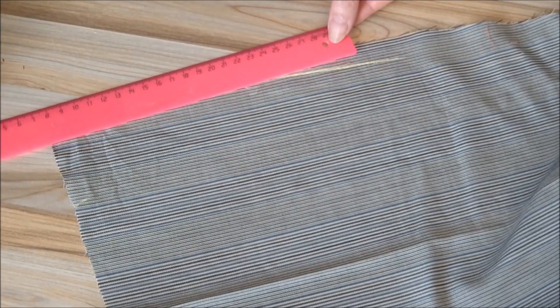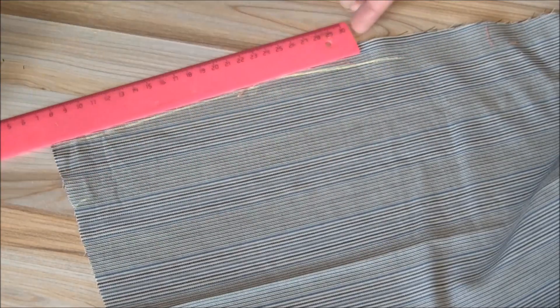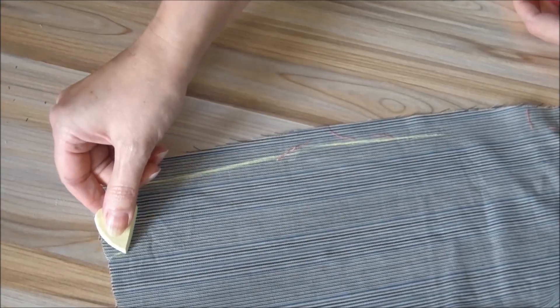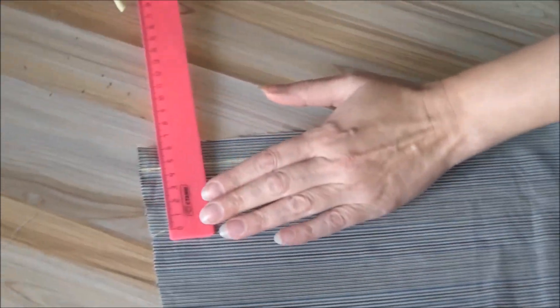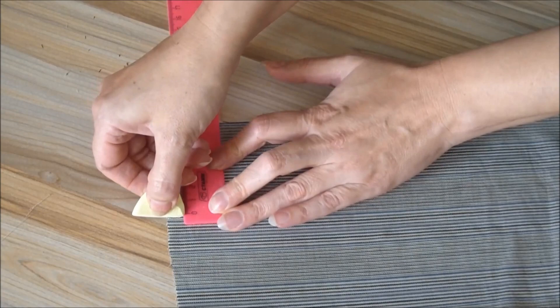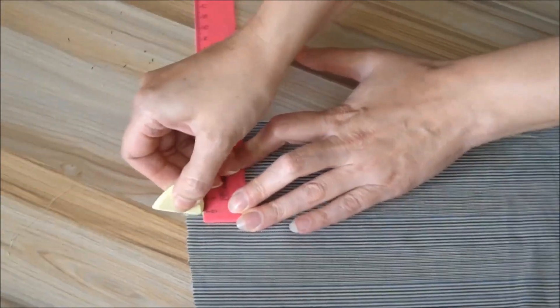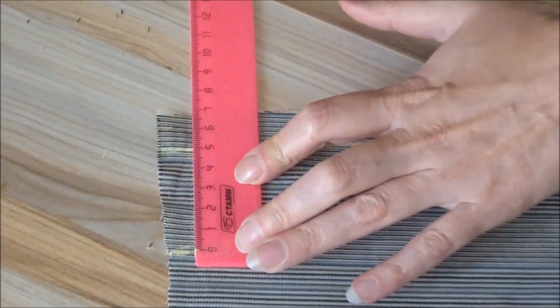First, mark seam allowances on front part of the pant on right side. Now step back 5 cm from the seam allowances line and draw a beveled line 18 cm long.